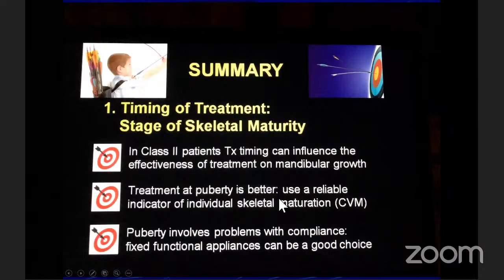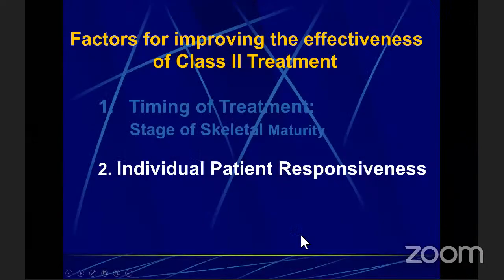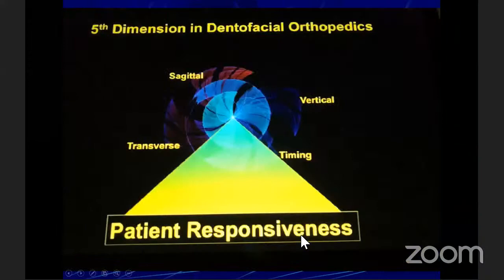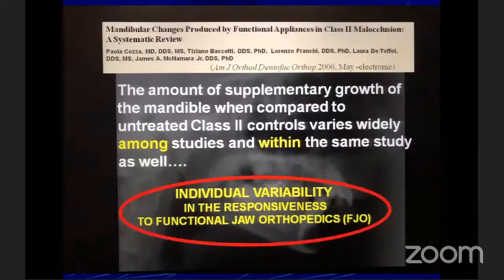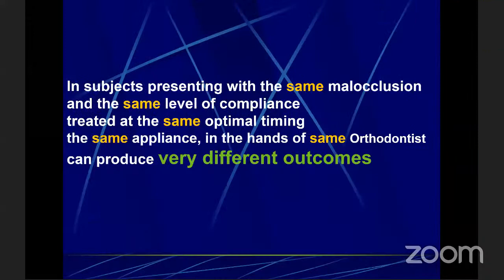Regarding the role of timing on long-term outcome of Class 2 treatment, Fulton found that with bionators the actual length of the mandible increased by 5 mm in long-term evaluations. To summarize the timing of skeletal maturity in Class 2 patients: treatment timing can influence the effectiveness of treatment on mandibular growth. Timing at puberty is better — use a reliable indicator of individual skeletal maturation. Puberty also involves problems with compliance, so fixed functional appliances can be a good choice for teenagers who are not compliant.